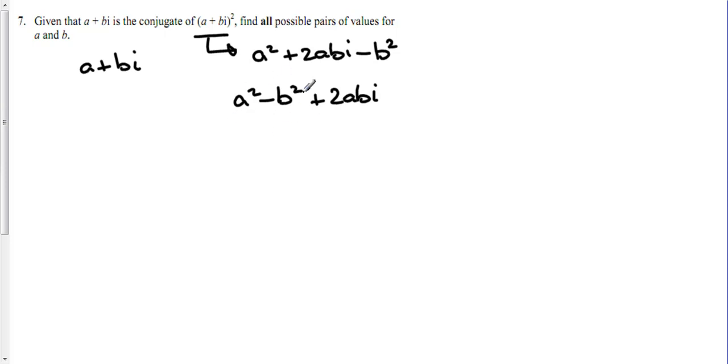For this to be the conjugate of this, the sign of this would change, so it becomes minus rather than plus. Which means that that is equal to a squared minus b squared minus 2abi. And therefore we can, by equating real and imaginary parts, set up a couple of simultaneous equations.